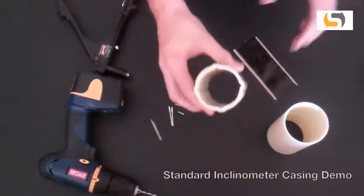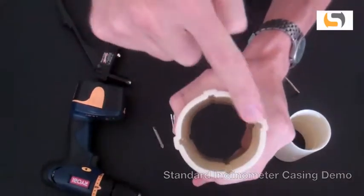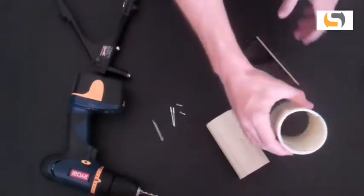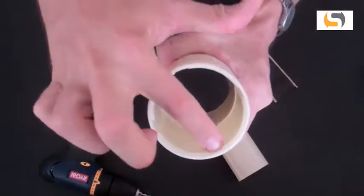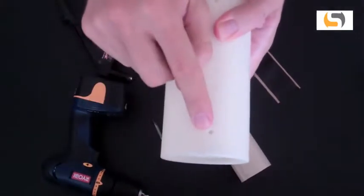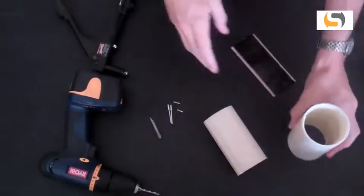ITM Soil USA's Inclinometer Casing consists of sections of ABS plastic casing which has four perpendicular grooves and the associated plastic couplings that have four guide grooves on the inside and two drilling guide holes on the outside at each end.